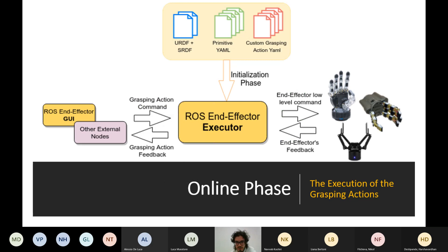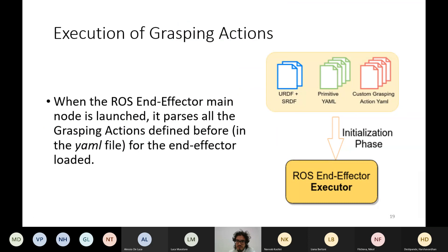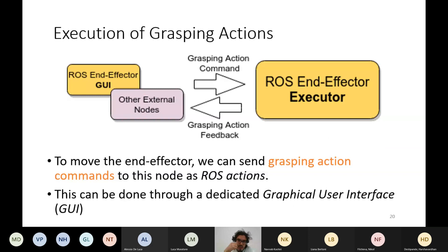For the online phase, in the initialization phase, the configuration files of the robot, the primitives, and eventually other custom grasping actions are parsed. After this initialization phase, all the actions provided for the specific end-effector can be commanded and then executed by the end-effector. To move the end-effector, we simply send a grasping action command through ROS topics. In particular, we use ROS actions — a particular aggregation of ROS topics — that permit us to publish on a topic and receive feedback on other topics. For grasping actions, we receive feedback about the completion of the action. The command can be sent directly by code, by terminal, or by directly publishing on the topics.